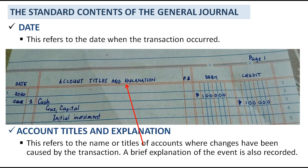Another content is account titles and explanation. This refers to the name or titles of accounts where changes have been caused by the transaction. A brief explanation of the event is also recorded. In this example, we have the account titles cash and Cruz capital, meaning the transaction on June 1, 2020 caused changes in those accounts.